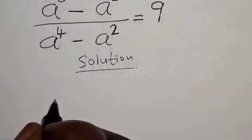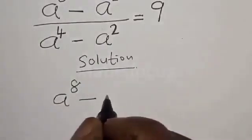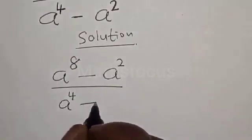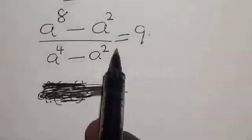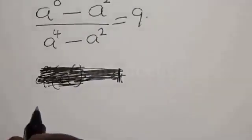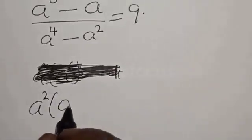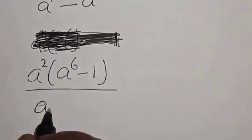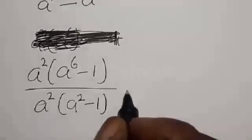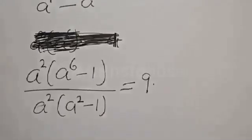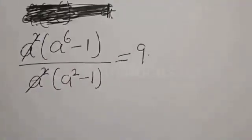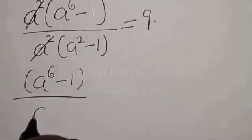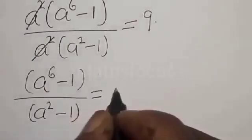We have the given equation. From here we can factor a squared out. We have a squared times (a raised to power 6 minus 1), divided by a squared times (a squared minus 1), is equal to 9. Now this a squared cancels, leaving a raised to power 6 minus 1, divided by a squared minus 1, is equal to 9.